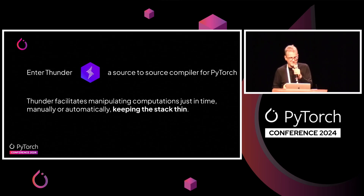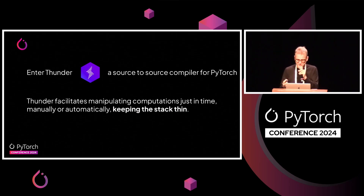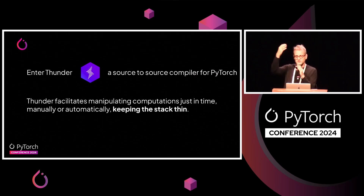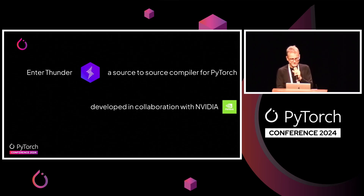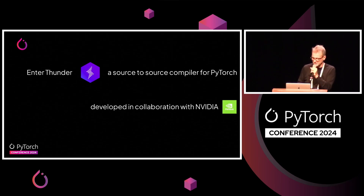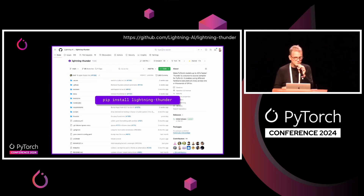And so with this observation in mind, we started developing what is now Thunder, which is roughly speaking a source-to-source compiler for PyTorch. In a nutshell, it facilitates manipulating computation manually or automatically. So when you get a model and you get the computation in front of you, you can transform it using automated transforms or manually, and you have full control of what's going to execute and where. This is developed in collaboration with NVIDIA. You can go to GitHub — it's all open. You can install Lightning Thunder. It's fairly early days, so don't expect everything to work, but we're working pretty actively at it every day.